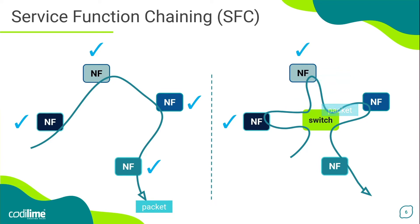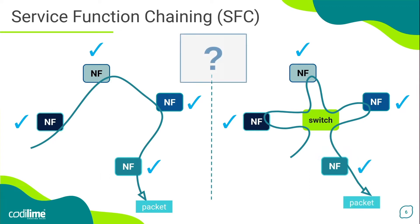The packets visit the network functions in the same order as before, but now they go through the switch. So, which of these two options is better? Well, there is no simple answer to this question. It all depends on various factors such as in what environment you deploy the network functions, what your network topology and architecture looks like, how you implement traffic forwarding in this architecture, and what general limitations you have.